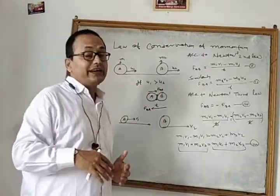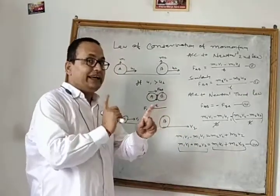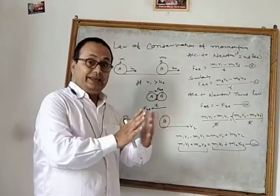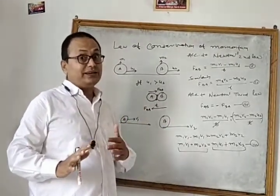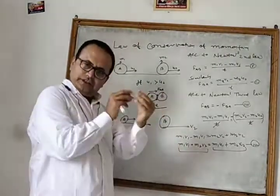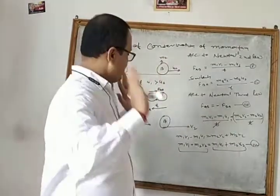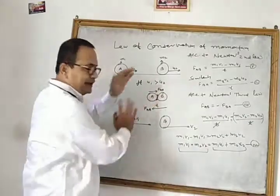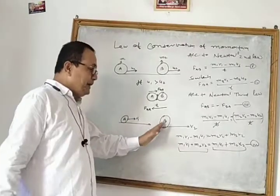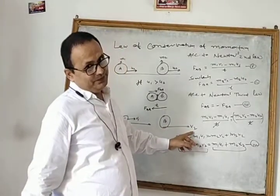When collision occurs, Newton's third law applies. A exerts force FAB on B; B exerts force FBA on A. The collision lasts for a small time T. After collision, A moves with velocity V1 and B moves with velocity V2. Momentum is the product of mass and velocity.